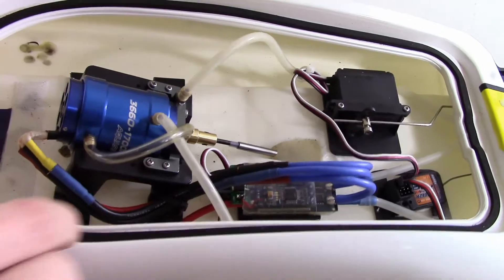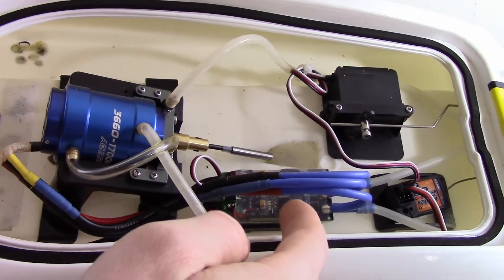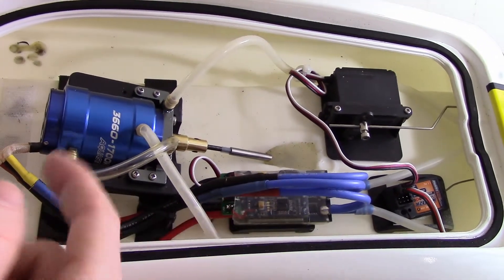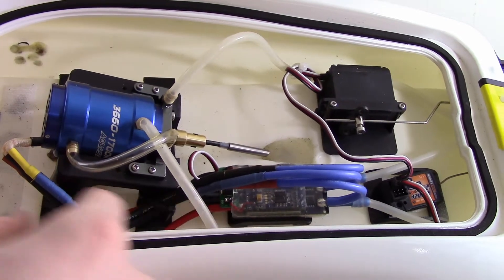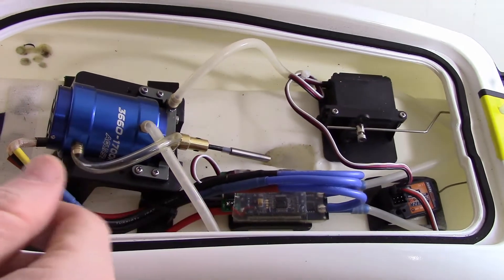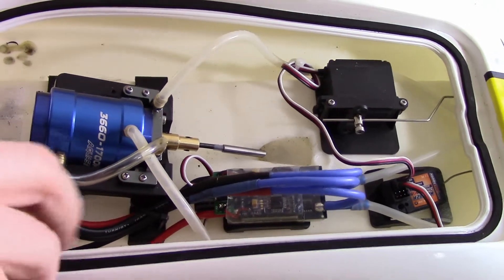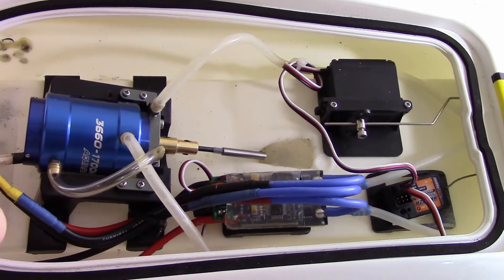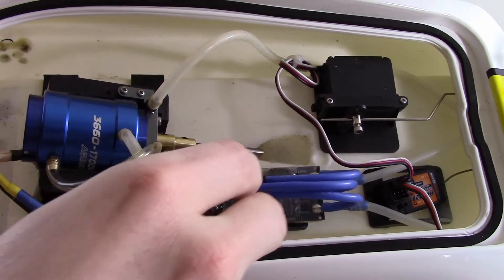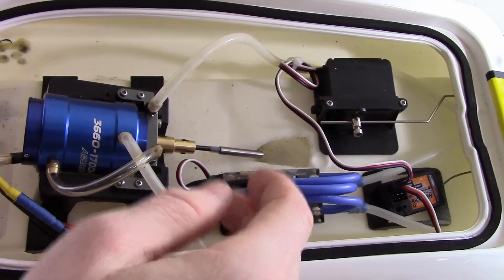As you can probably see, I had to add some extensions between the speed controller and the motor because the wires were just not long enough. What you don't want to do is add too much length between the battery and the speed controller. It's better to do it between the speed controller and the motor.